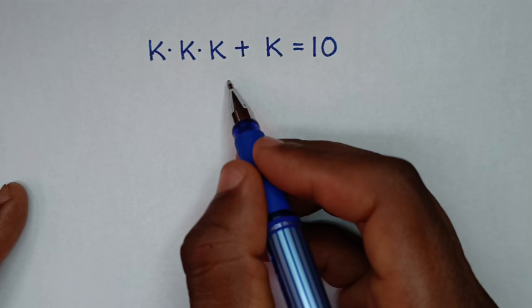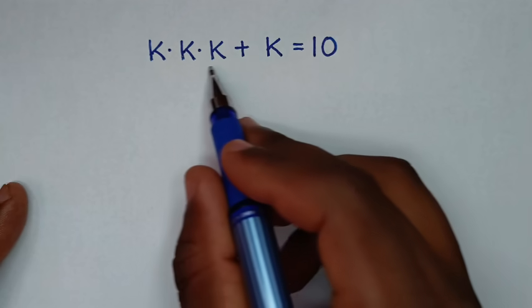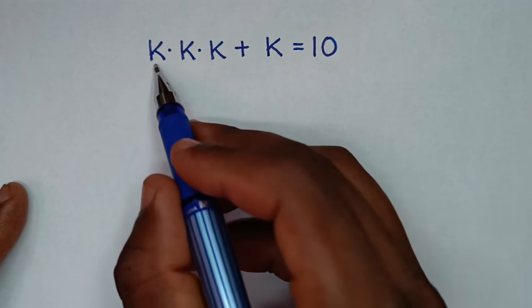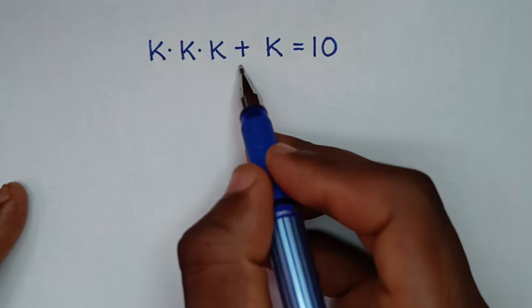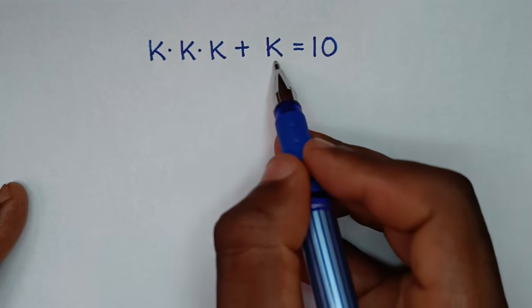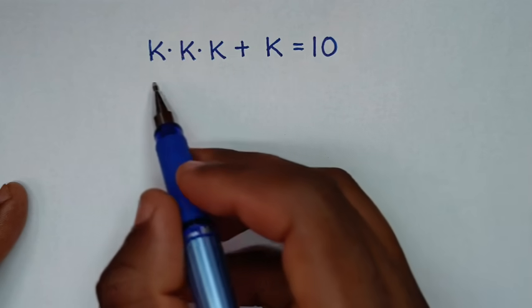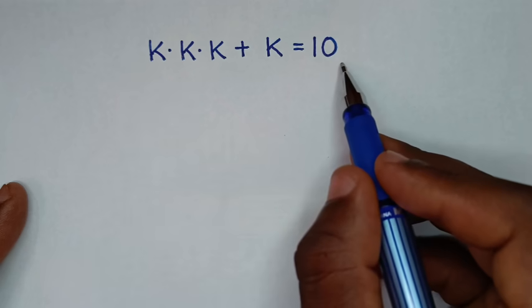Hello, you are welcome to solve this math problem: k times k times k plus k is equal to 10. Find the values of k from this equation.